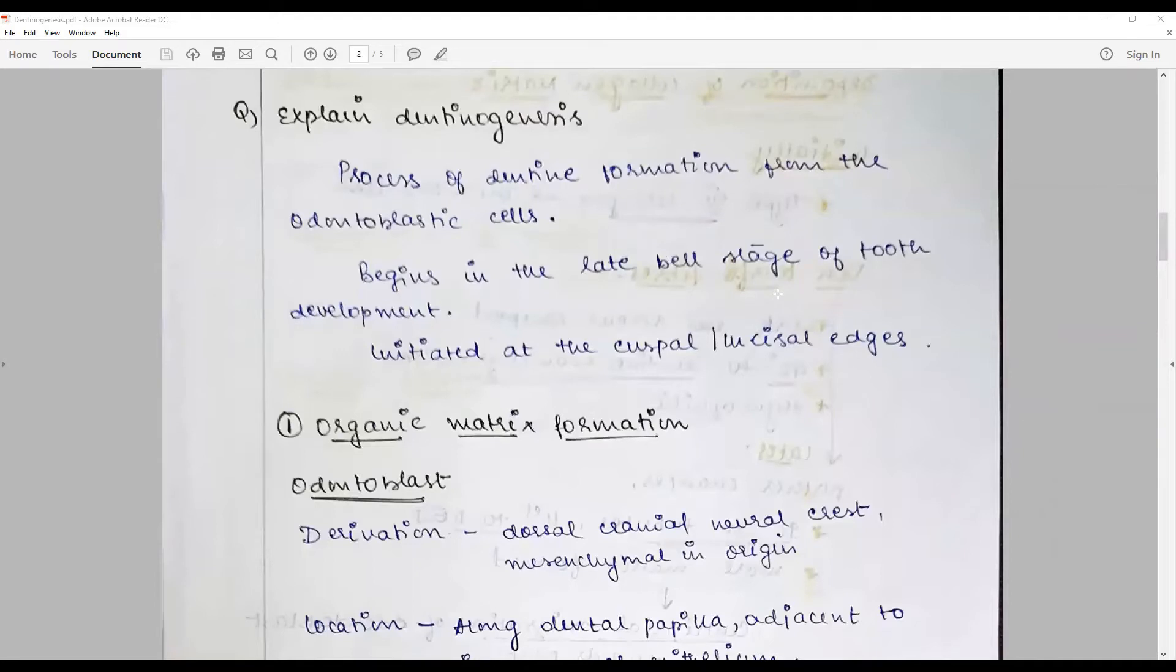Dentinogenesis is the process of dentin formation from odontoblastic cells. It often begins in the late early to late bell stage of tooth development and is initiated at the cusp or incisal edges, progressively progressing downwards. Odontoblasts are differentiated from ectomesenchymal cells derived from neural crest cells. They are ectomesenchymal in origin.